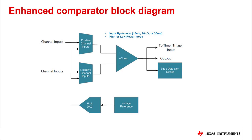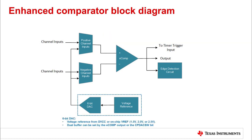The eComp can also operate in high power or low power modes, which gives users control over the comparator speed. The eComp integrates a 6-bit DAC as the reference voltage input. This DAC has a dual buffer on-chip reference voltage selection, which can set different values to get two different DAC output voltages as the eComp reference input. The dual buffer strobe can be configured by either hardware or software. In hardware mode, the buffer is controlled by the comparator output. In software mode, the buffer is controlled by the CP DAC SW bit.